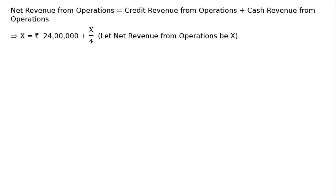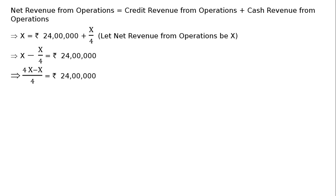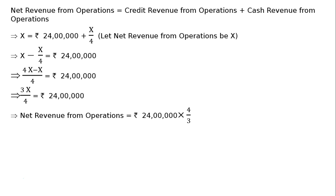X by 4 is cash revenue from operations because cash sales are 25 percent of net sales, hence one-fourth of total sales is cash sales. Solving: X minus X by 4 equals rupees 24 lakhs, which means 3 by 4 of X equals rupees 24 lakhs, therefore net revenue from operations equals rupees 24 lakhs multiplied by 4 by 3, giving rupees 32 lakhs.